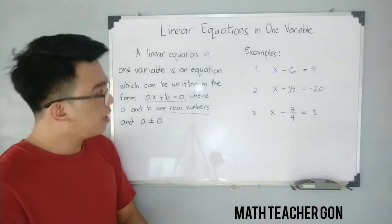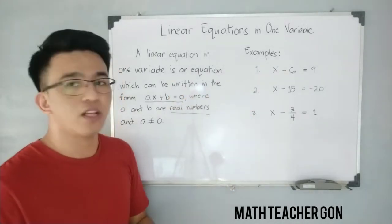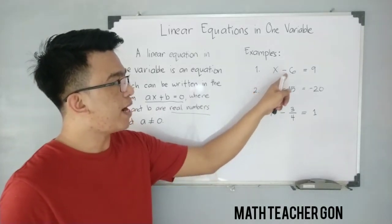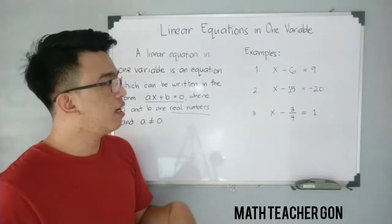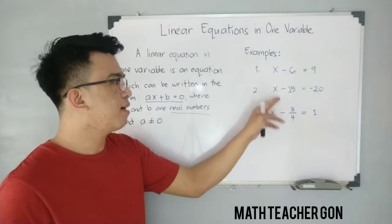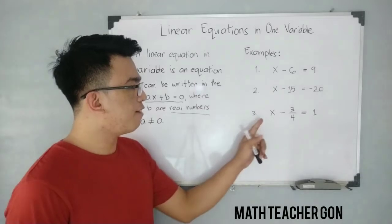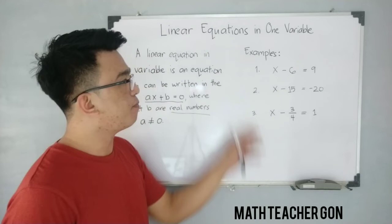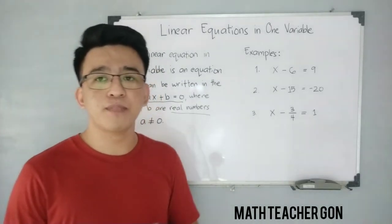These three equations are examples of linear equations in one variable. The first one is x minus 6 is equal to 9, where the variable is x. For number two, x minus 15 is equal to negative 20. And for number three, we have x minus three-fourths is equal to 1. These three examples are all linear equations in one variable.